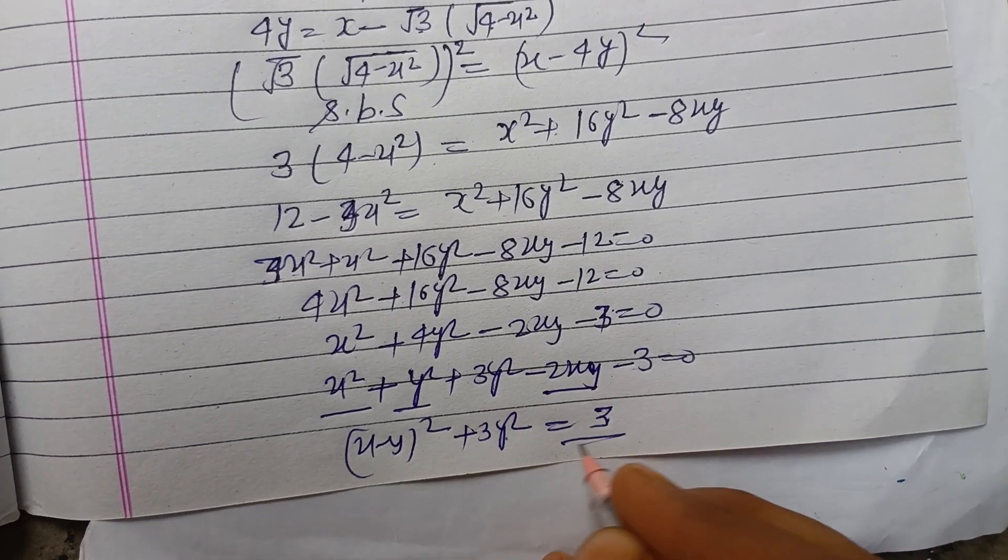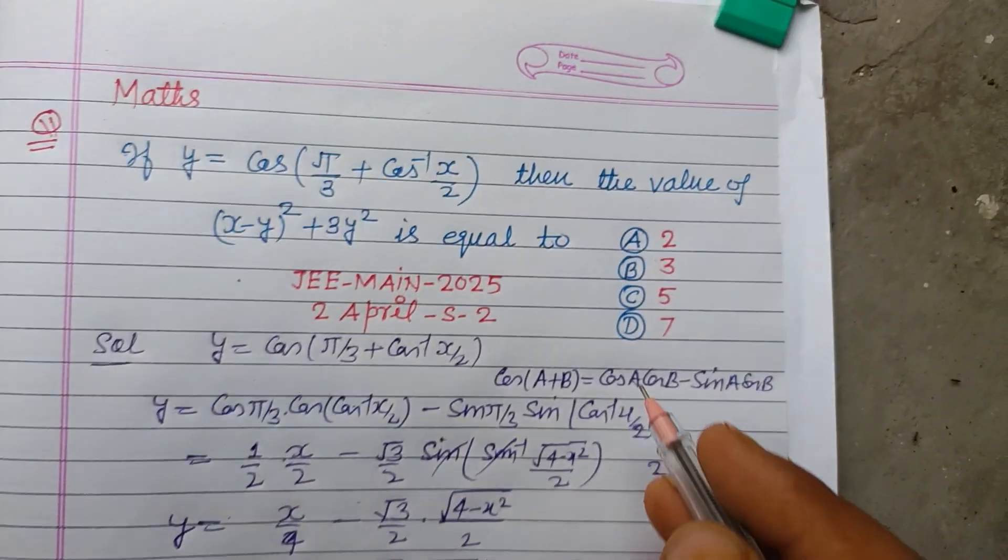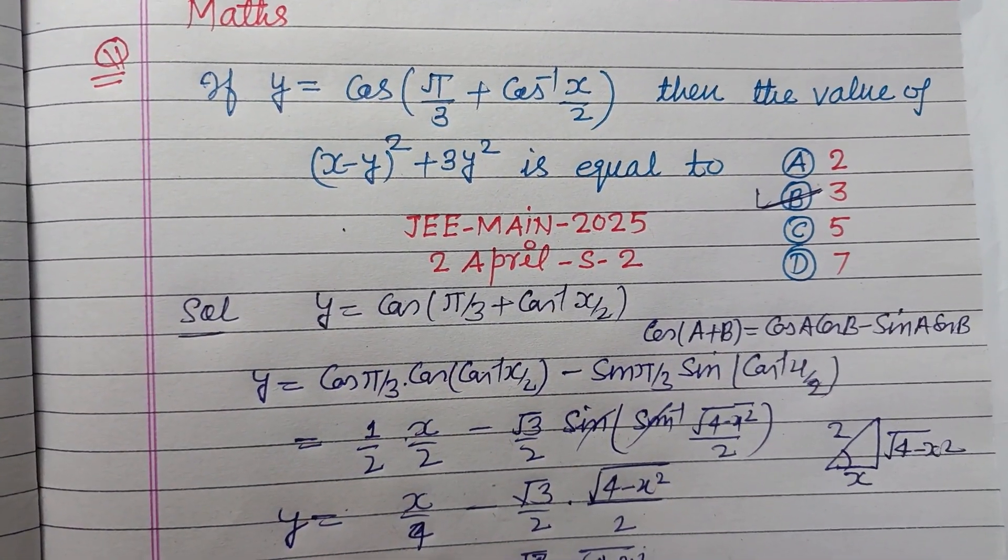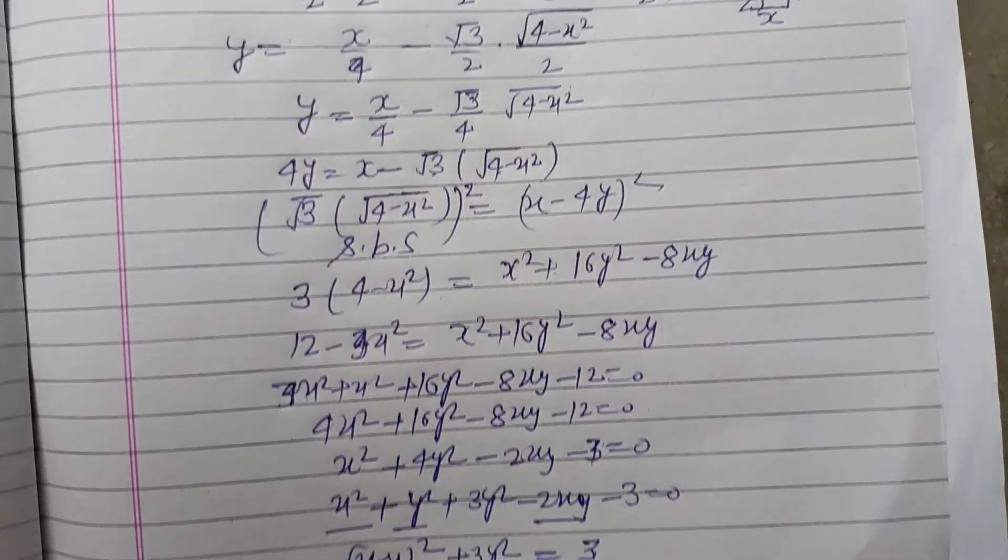So 3 is the correct answer. The value of this is asked, so 3 is the correct answer of this question which is found in option B. So option B is correct. I hope you got it, please like the video, subscribe the channel, thanks for watching.